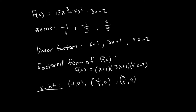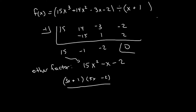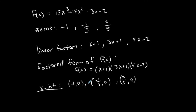So we have three real rational zeros, all visible on the x-axis as x-intercepts. The fully factored form of f(x) is the product of three linear factors: (x plus 1)(3x plus 1)(5x minus 2). The process: start with the function, list possible rational zeros using the rational zero theorem, determine which is an actual zero by plugging in, use synthetic division to reduce degree, then factor the resulting quadratic.